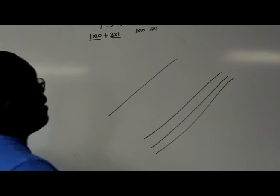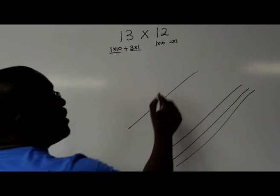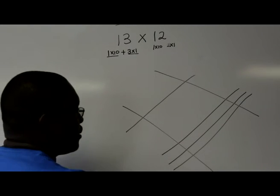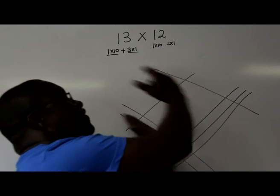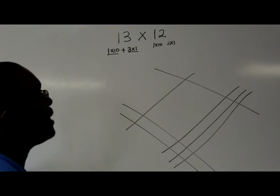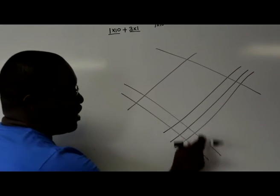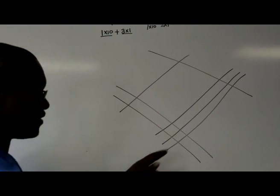And then now let us write 12. So 12, we're going to write it across like that, 1, 2. So 13 is going like that and 12 is going the other diagonal. So what we have here is that these are the units, units and units.